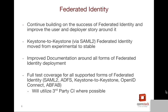Federated Identity is a huge part of Keystone at this point. There was a large amount of success with getting Federated Identity into Icehouse, and similarly moving into basic support for Keystone-to-Keystone Federation via SAML 2 in Juno. We're looking to continue to improve upon this success, improve the deployer story around it, make the deployment options clearer and better, significantly improve the documentation around it, and maintain a full set of test suites, including third-party CI where possible.